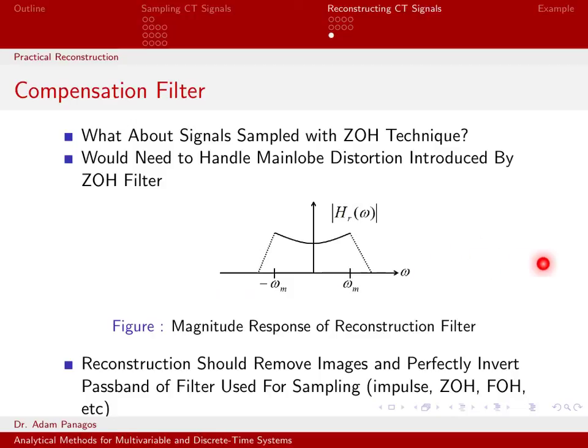Reject images, and invert any frequency-dependent amplitude distortion that your sampling filter introduced to begin with. Now let's take a look at another example.